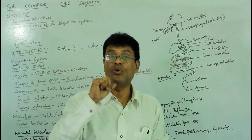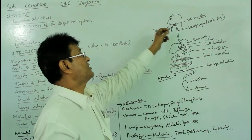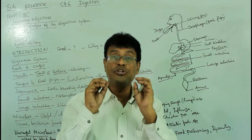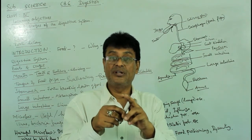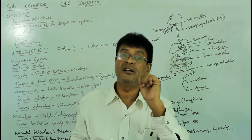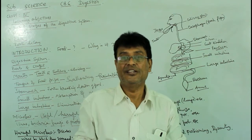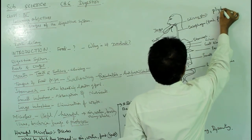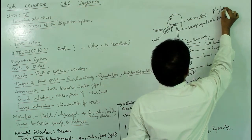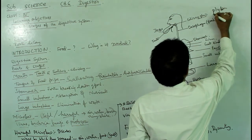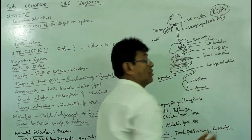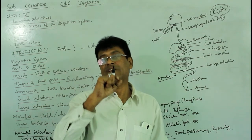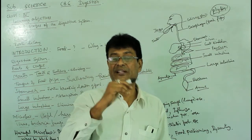The taste buds are followed by the salivary glands, which produce enzymes. This enzyme breaks the starch in food partially and is known as ptylin — also called salivary amylase. Ptylin is the name for the enzyme in saliva.